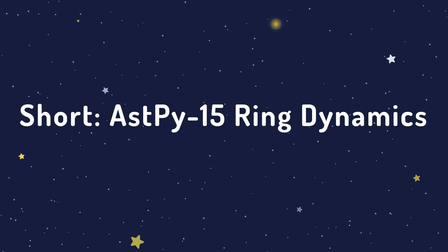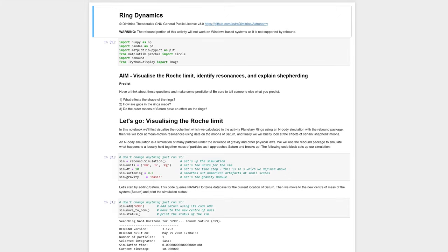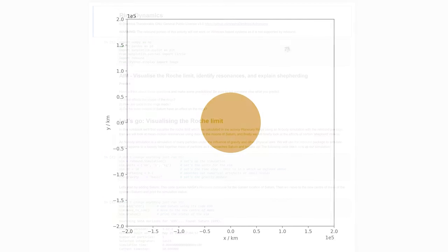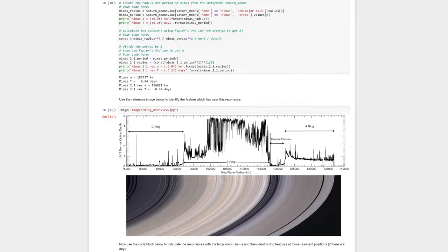In the Ring Dynamics activity, ASPI 15 students visualize the Roche limit using an n-body simulation package called Rebound. They then calculate the location of resonances between moons, and resonances between moons and ring particles. Students can then identify ring features associated with each of these resonances. At the end of the activity, students briefly look at Shepherd moons and their effects on the rings.